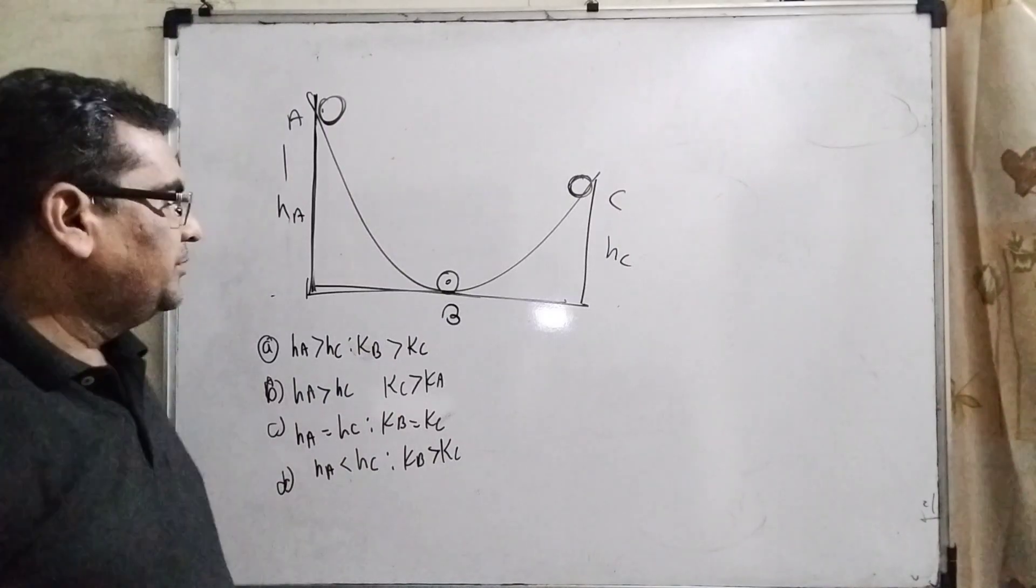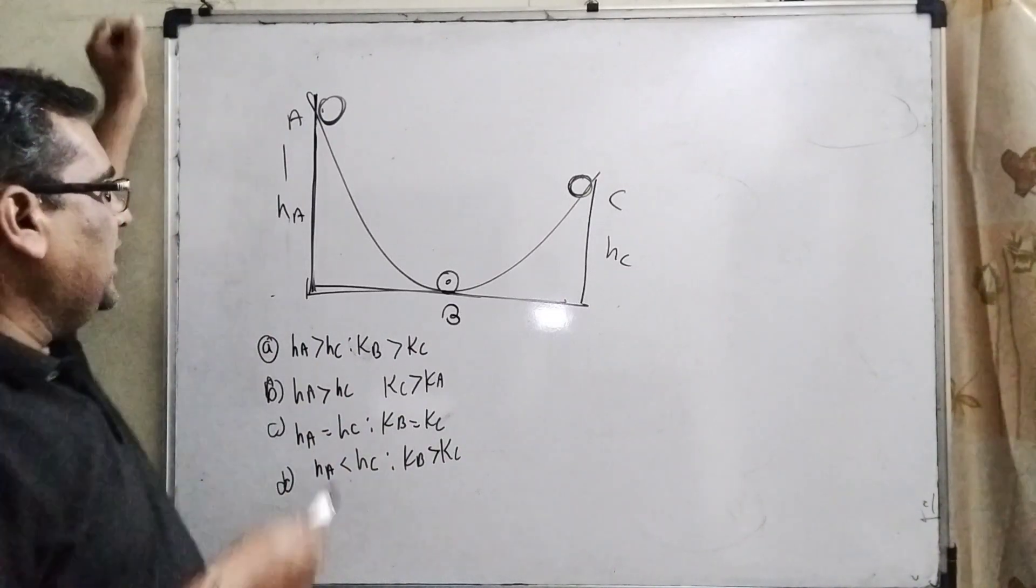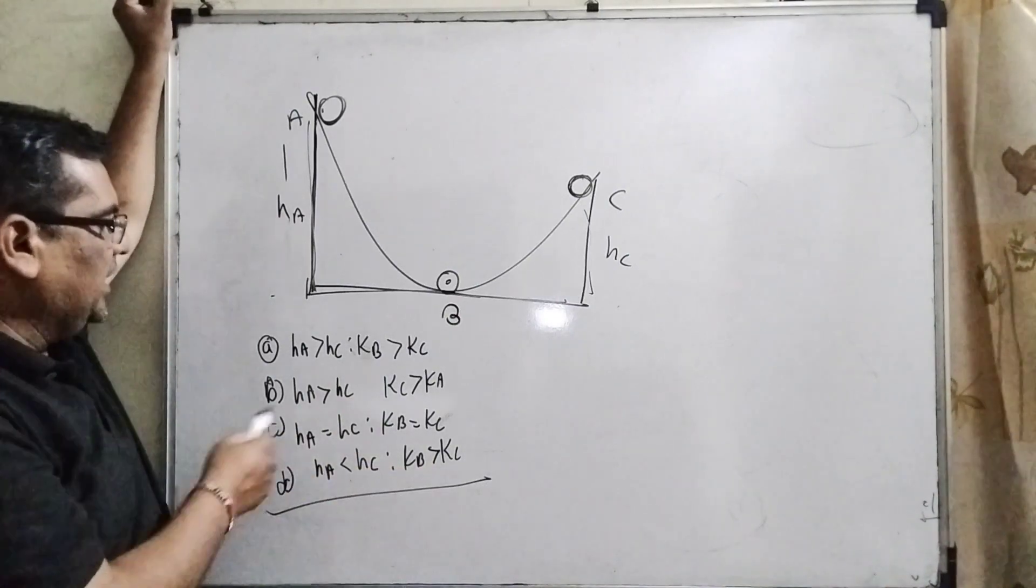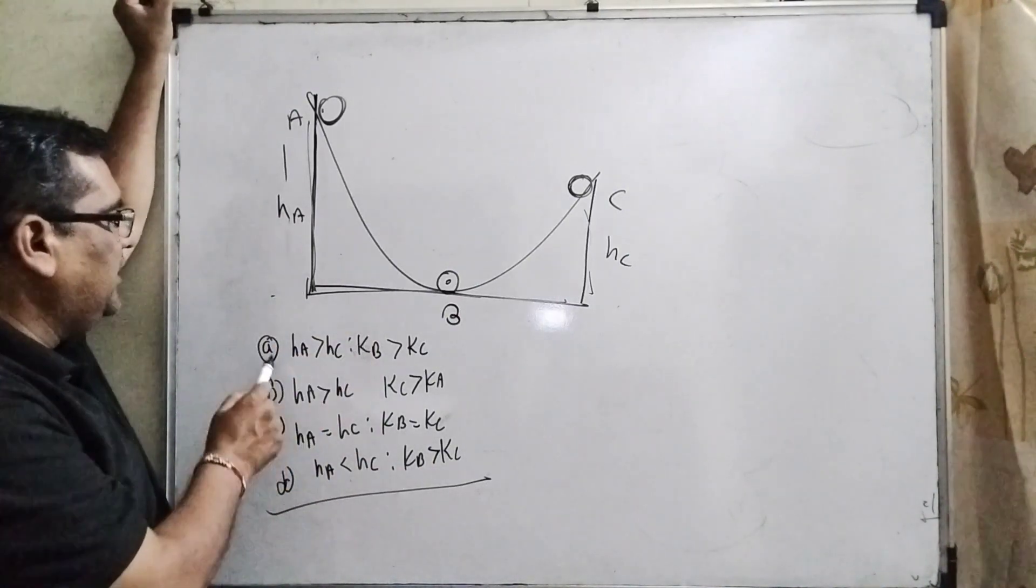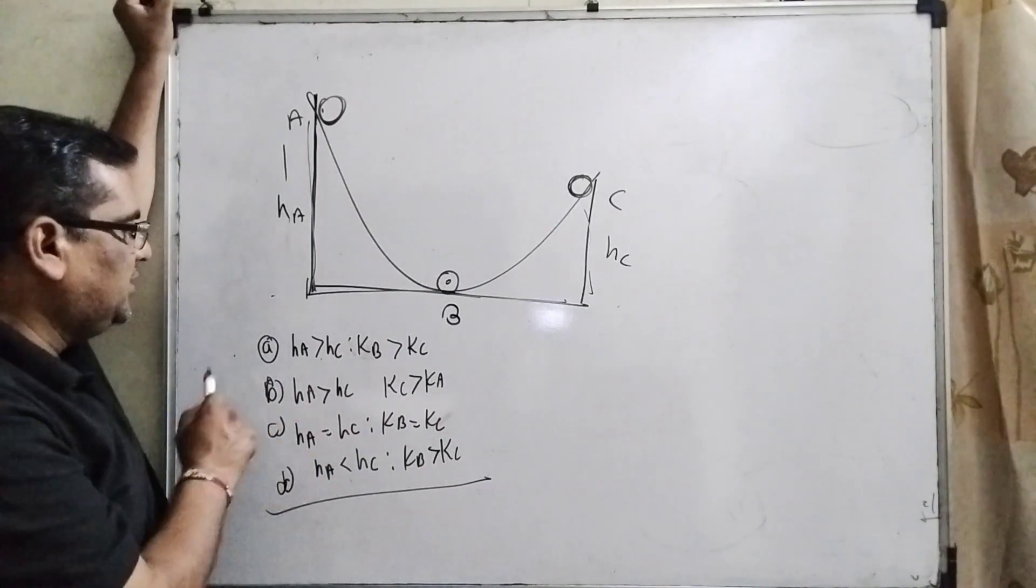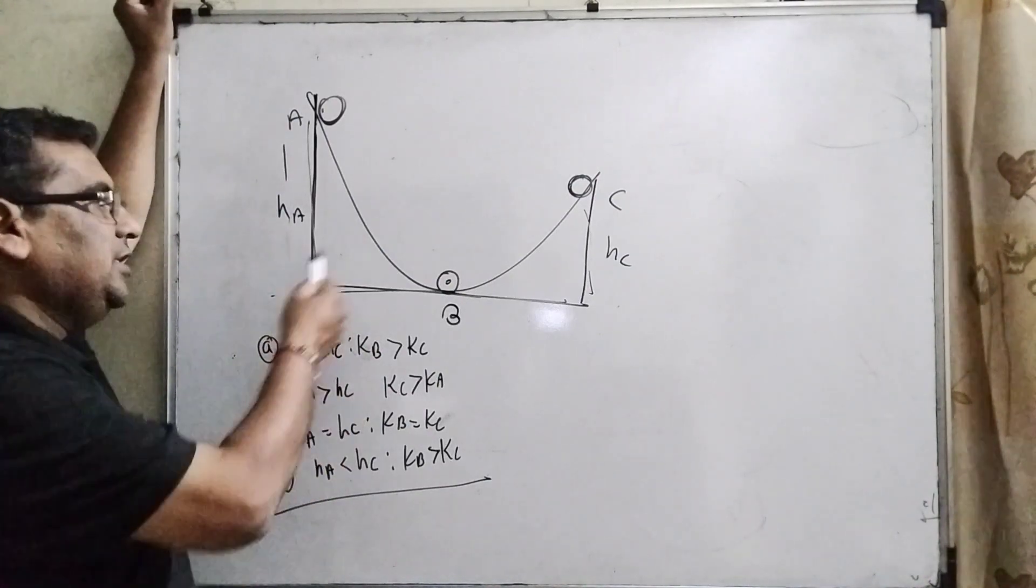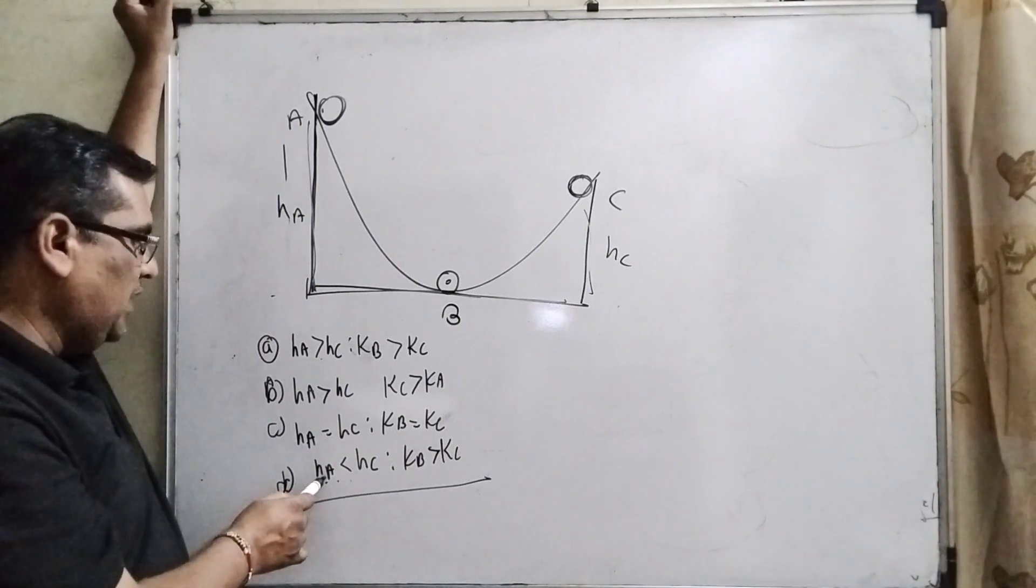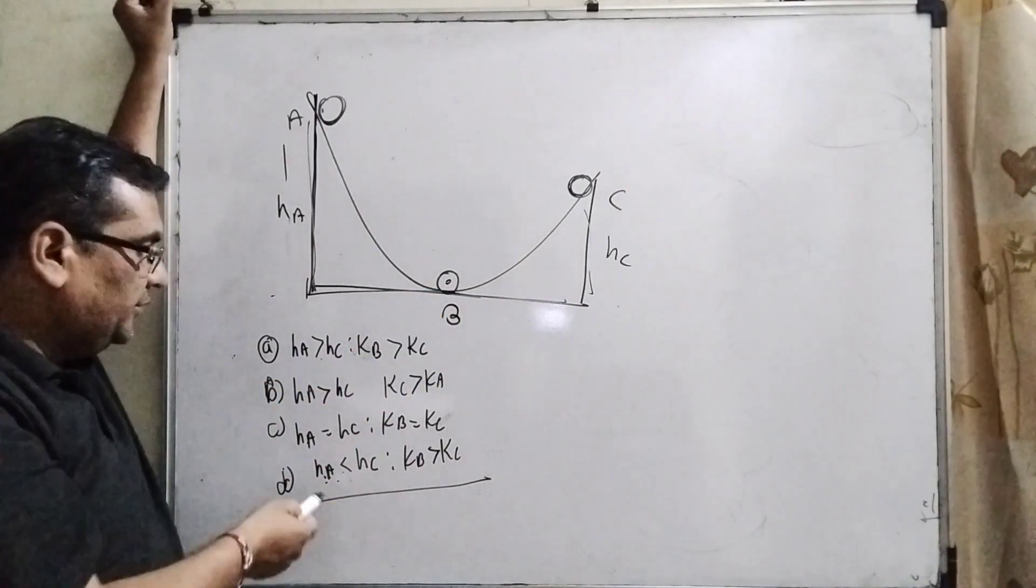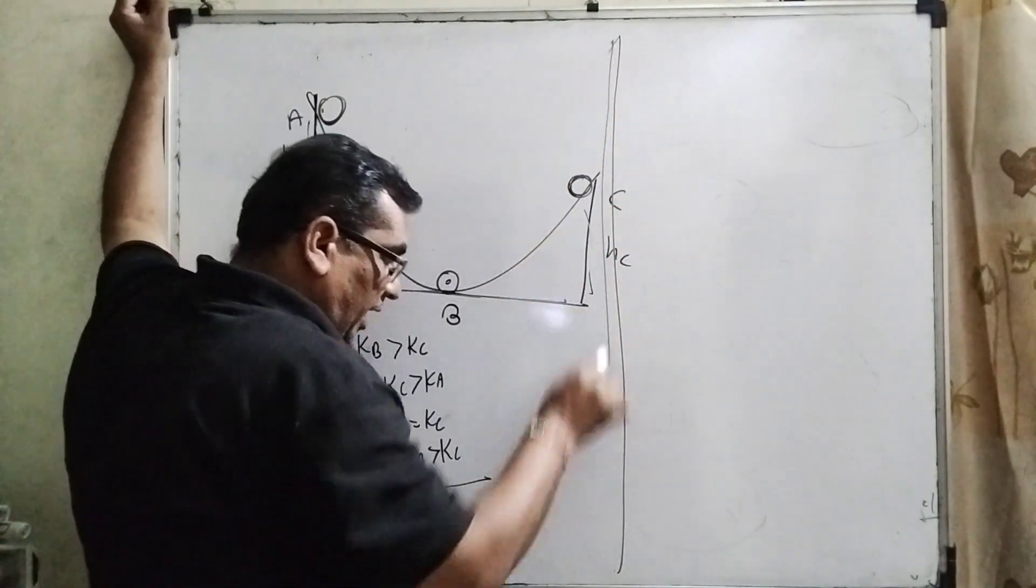Dear students, this question is totally based on laws of conservation of energy. You can see that here, HA is greater than HC. So in the first look, we can see that HA is greater than HC. This means option A and B are the most probable answers, because HA is not equal to HC. Option D, HA is less than HC, is therefore not possible. So in first look, these seem right, but we have to solve it properly.